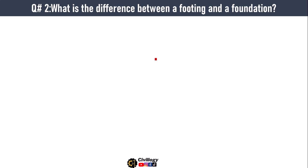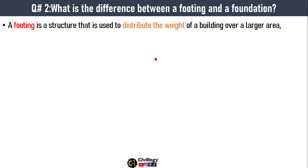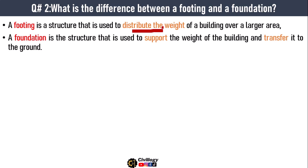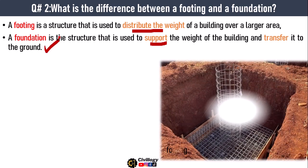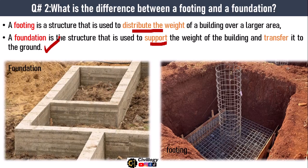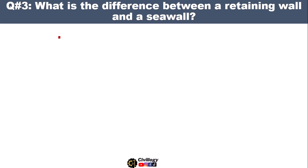Question number two, usually asked during interview: what is the difference between a footing and a foundation? A footing is a structure that is used to distribute the weight of a building over a large area. A foundation is the structure that is used to support the weight of the building and transfer it to the ground. Here are the pictures of footing and foundation.